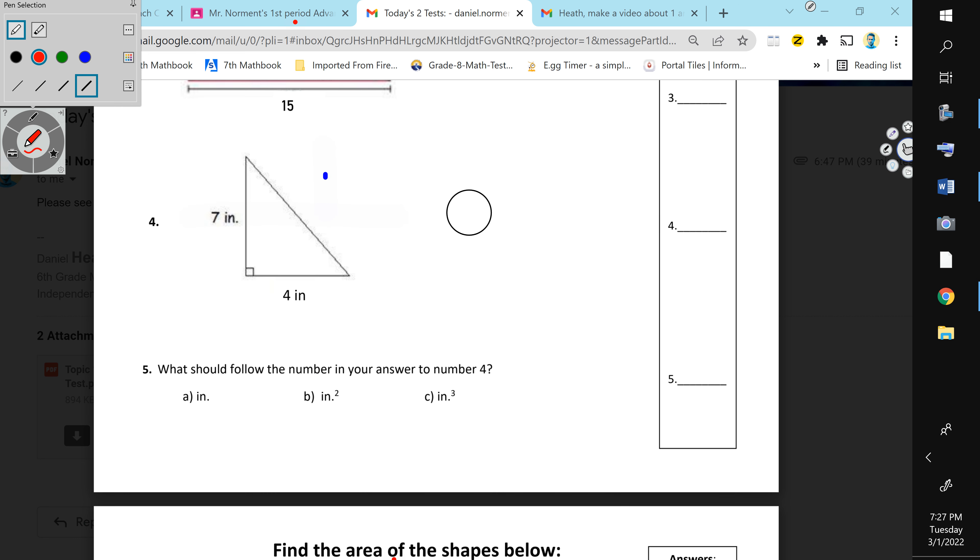Number four, same thing. I would take seven times four, I would cut four, cut it in half, and then multiply, and that answer is the correct answer. So, good luck with that.